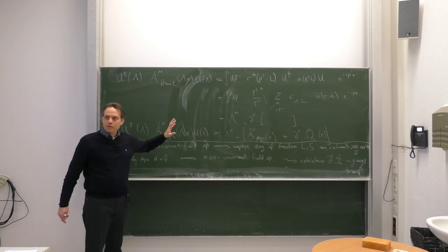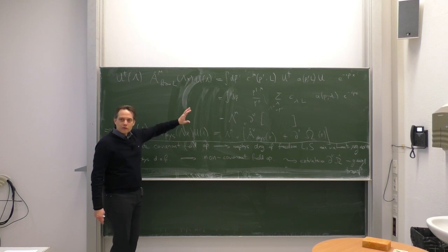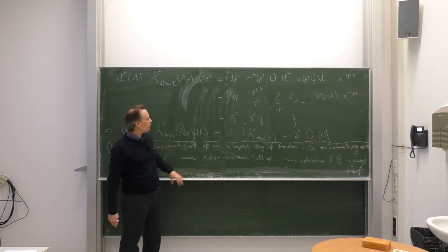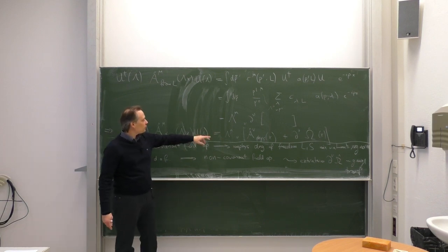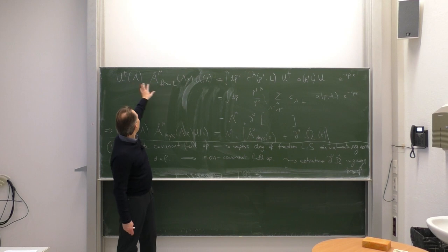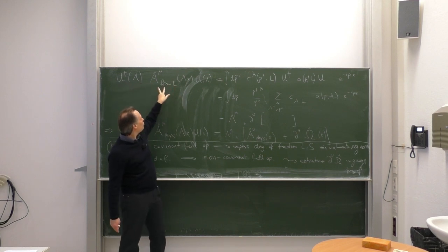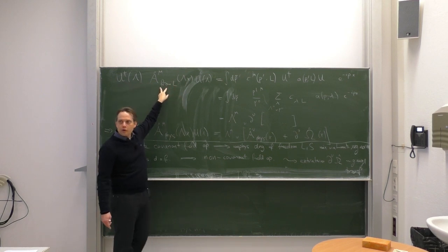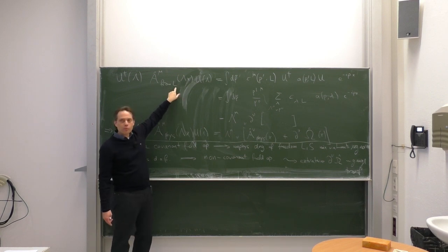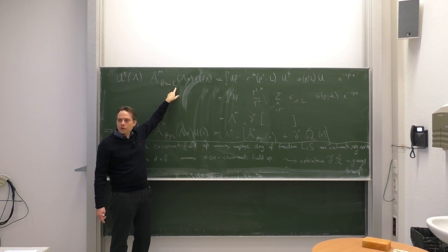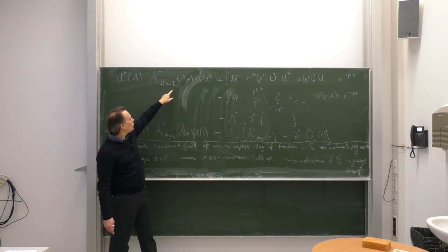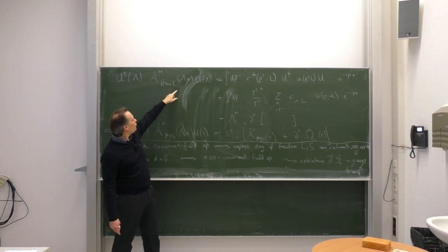Let us begin with a brief recap of the last three minutes from yesterday, where time was running too fast and I probably made a small misprint at the end. Here is again the Poincaré transformation of a field where we only take the generator corresponding to our index L, to the polarization vector L, which is one of the unphysical polarization vectors.